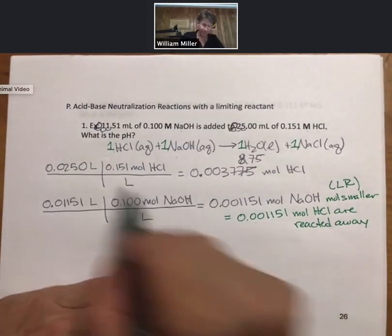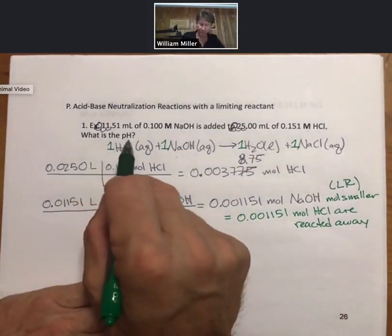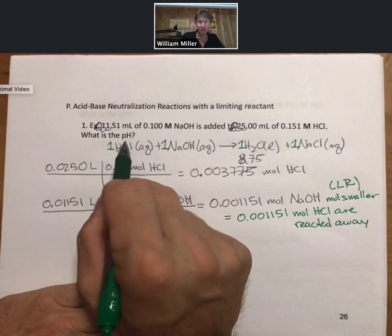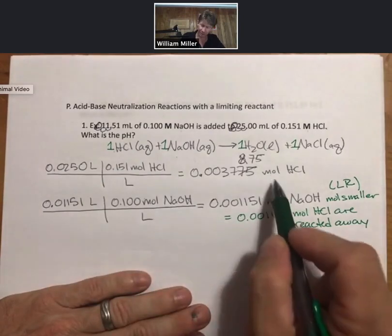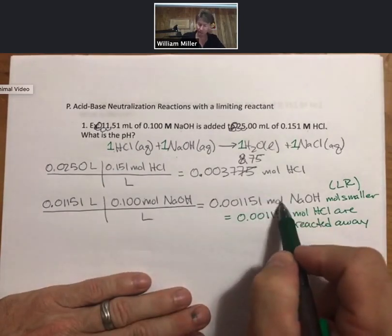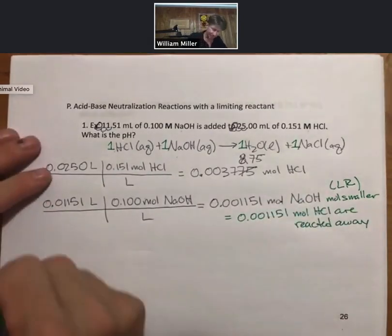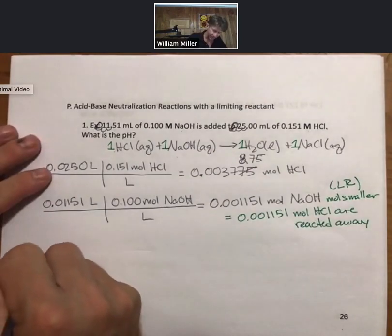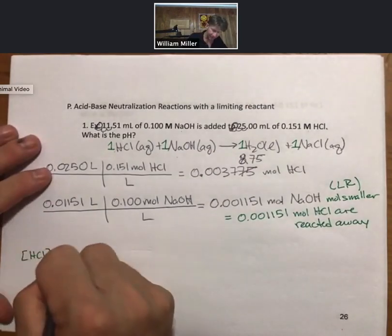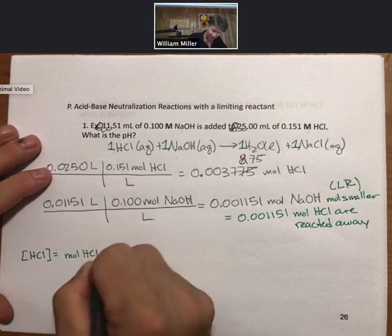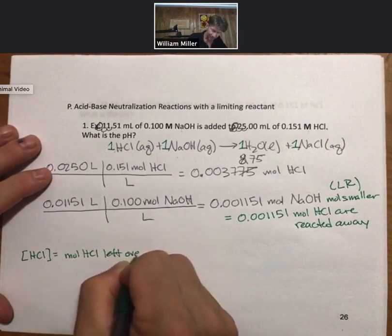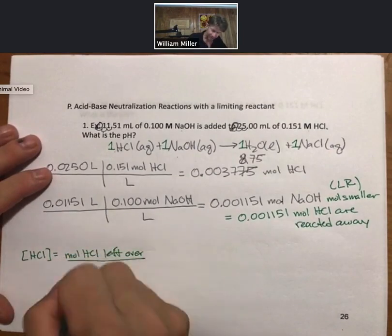Let's see what we're being asked. What is the pH? To find the pH we need the concentration of hydrogen ion. To find that we're going to need to know the concentration of the HCl that's left over. Concentration of HCl is going to equal moles of HCl left over divided by total volume.